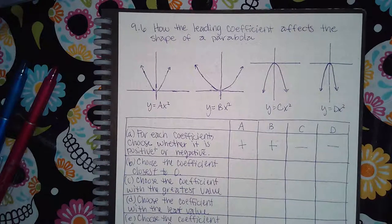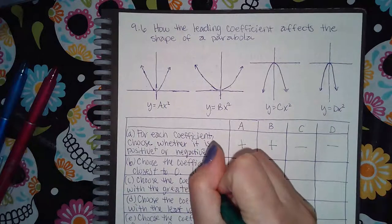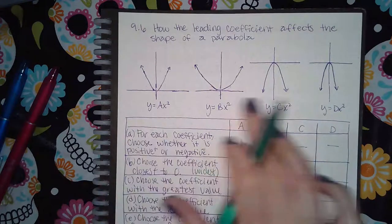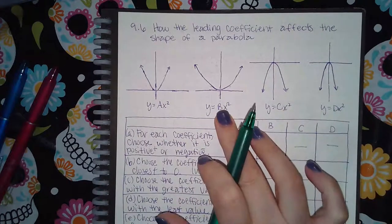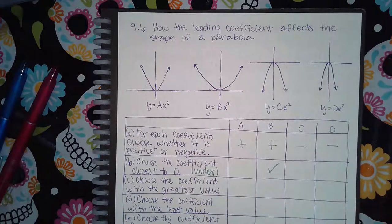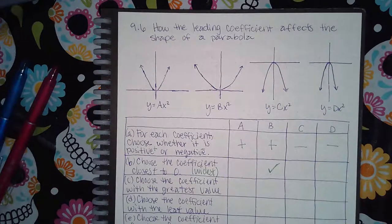Choose the coefficient closest to zero. Essentially what that means is it's the widest graph. And so of all four of these images, the widest one is B. So from the dropdown arrow I would be selecting B.